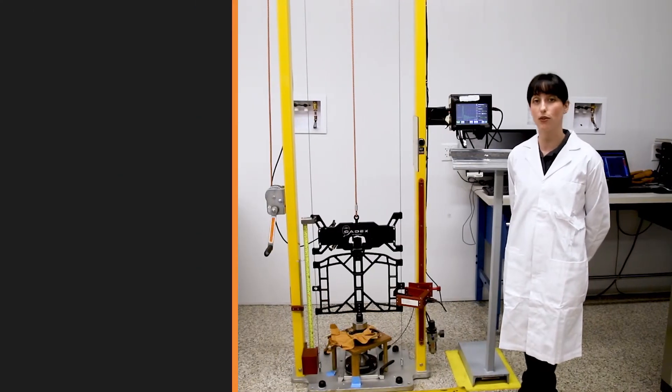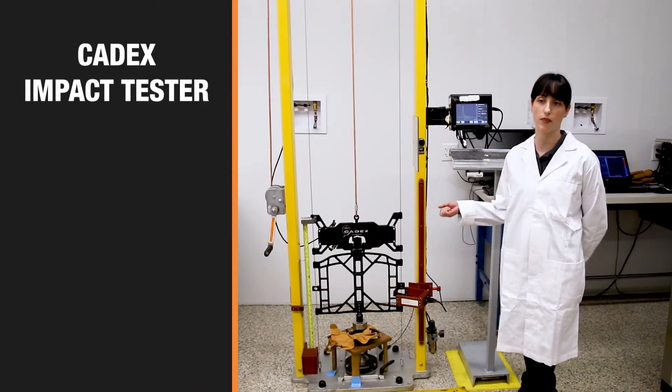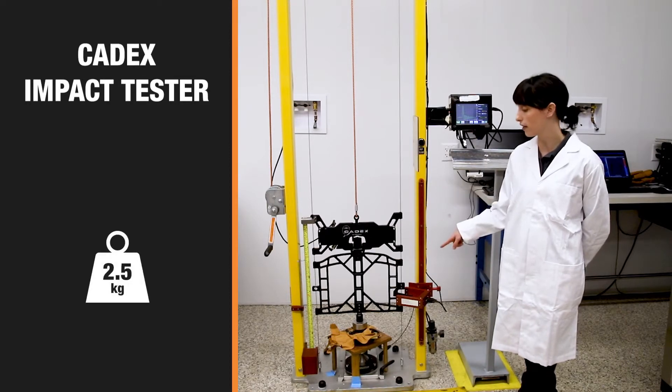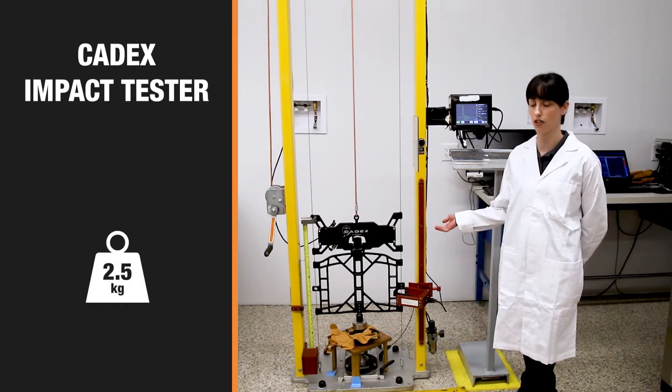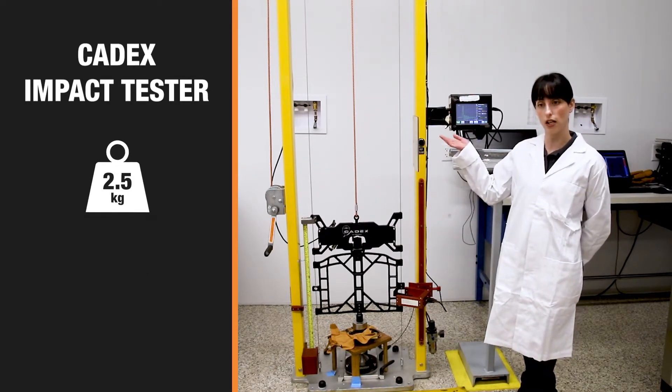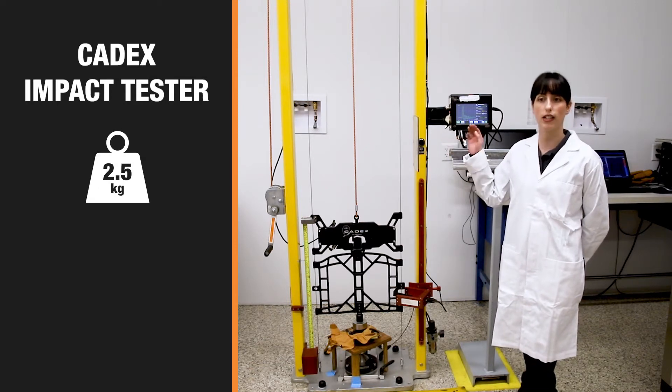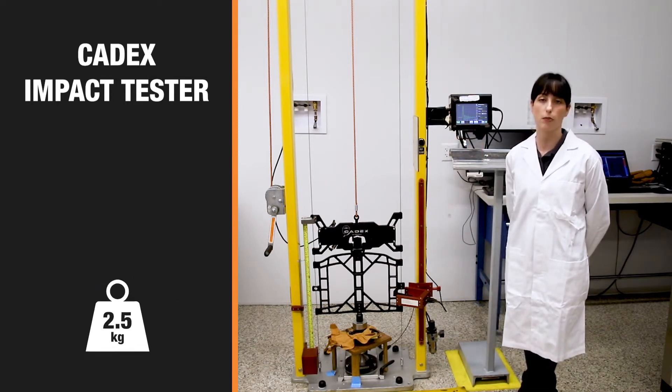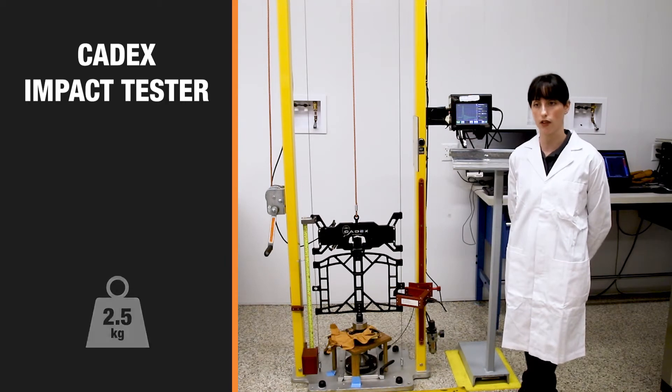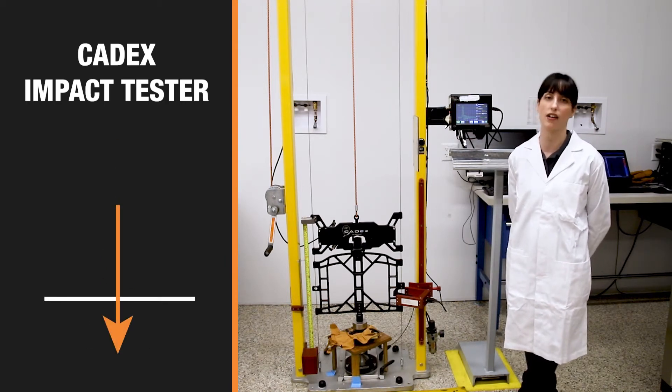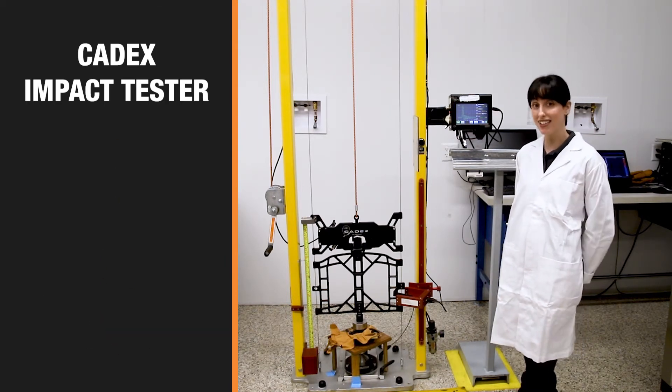At Superior Glove we use a Cadex Impact Tester. The way it works is a two and a half kilogram weight is attached to the carriage. The carriage lifts up to a predetermined height, releases the weight and the weight drops on pre-measured impact points of the glove. The force transmitted by the impact is recorded by the computer. Let's see it in action.